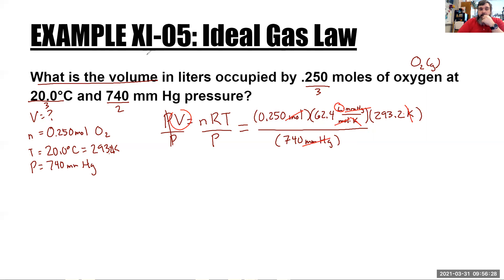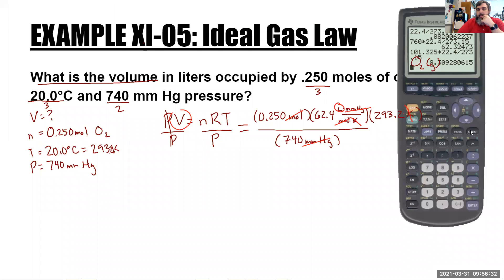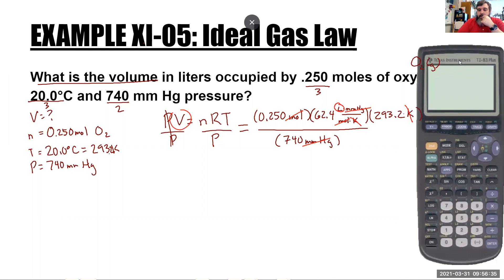All right. Guess what time it is. It's calculator time. Let's pull up a calculator. Got to find that thing. Let me put that there. All righty. So let's plug these numbers in. So 0.250 times 62.4 times 293.2. Got a little dyslexic there. 293.2 divided by 740. I almost goofed up. I divide. It's a great thing about a graphing calculator like this. I can change it out and I get this value here.